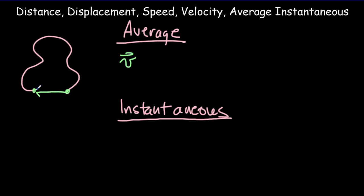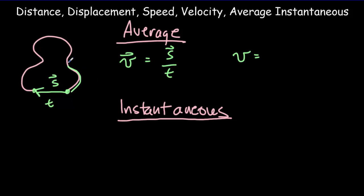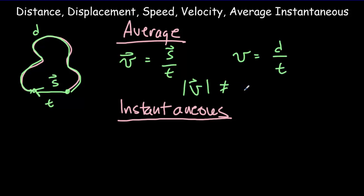We could draw a vector called the displacement vector. The IB will use an S for the displacement vector. You take that vector and divide it by the amount of time it took to make that motion. So your average velocity would equal displacement over time. However, if you're talking about the average speed, then we would have to consider the path taken — the total distance D divided by the amount of time. It's important to note that for average values, the magnitude of the velocity does not equal the speed.